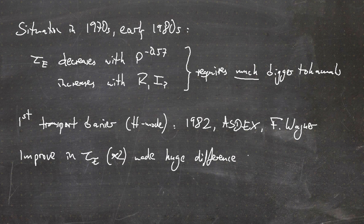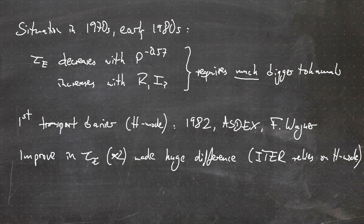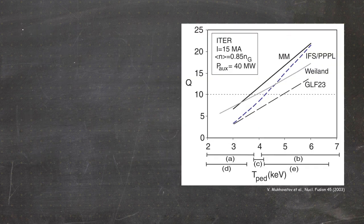ITER relies on the H-mode to achieve its peak performance. When we look at the profiles, we see that the temperature profile is what we call stiff. The temperature profile is stiff, meaning it is sensitive to the temperature at the plasma edge.